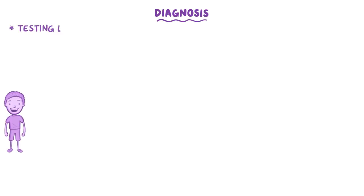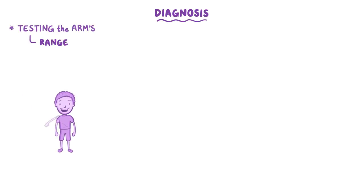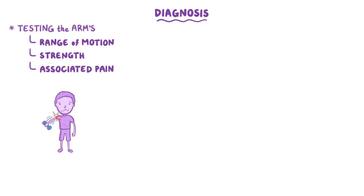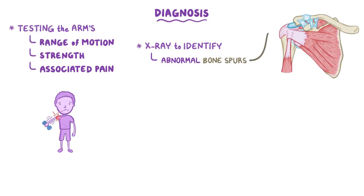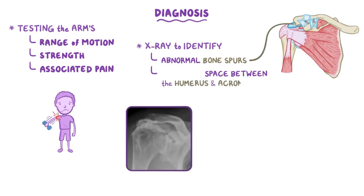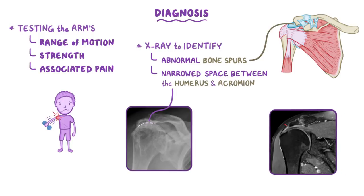The diagnosis of a rotator cuff tear mainly relies on testing the arm's range of motion and strength, and any associated pain. An x-ray may identify the presence of abnormal bone spurs on the acromion, or if the space between the head of the humerus and the acromion is narrowed. An MRI can visualize the torn tendon and identify if it's a partial or complete tear.